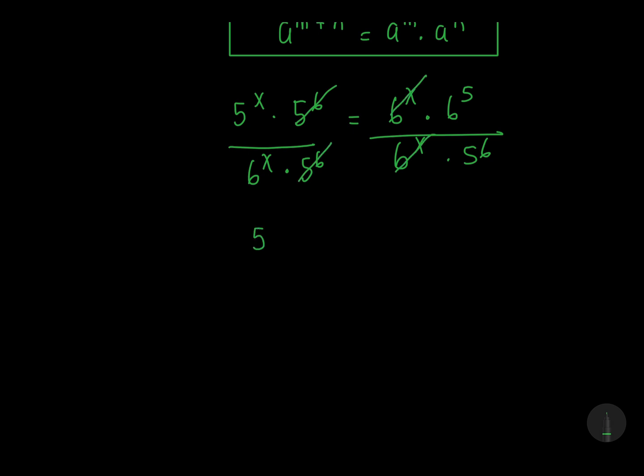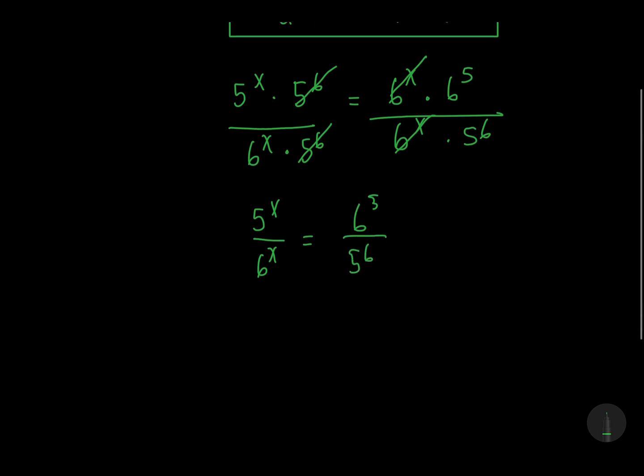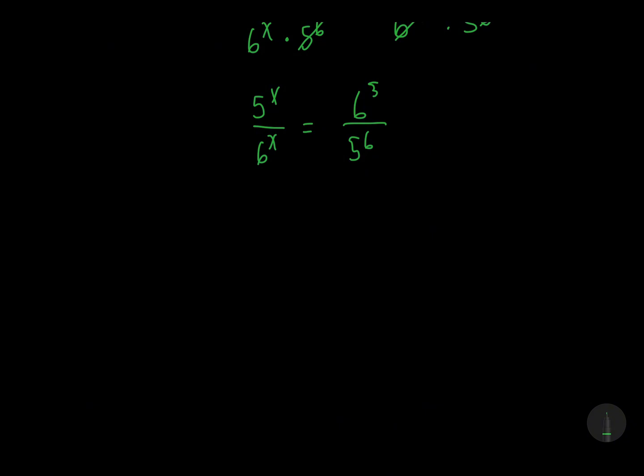So we'll have 5 to the power x and 6 to the power x, 6 to the power 5 and then 5 to the power 6. This can be written as 5 over 6 all to the power x.